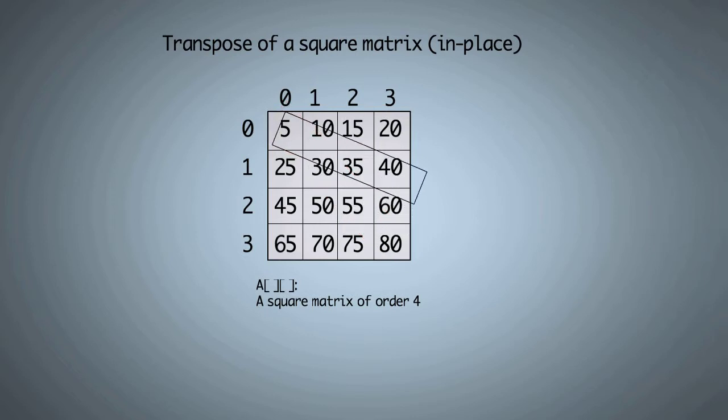Then we will swap first row values with first column values. a[0][1] will be swapped with a[1][0], a[0][2] with a[2][0], a[0][3] with a[3][0]. Similarly we will swap second row values with second column values and so on.